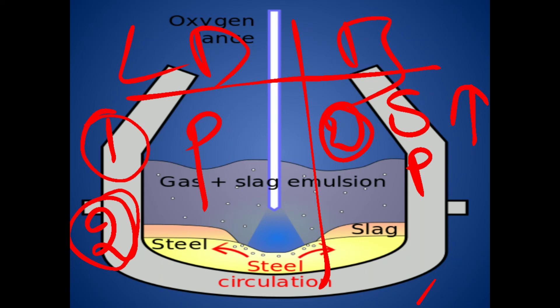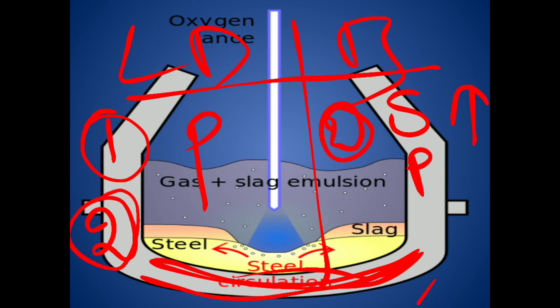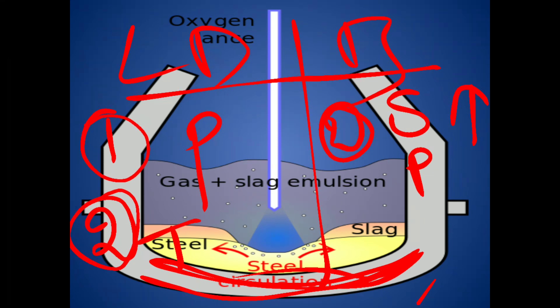Second difference: in the LD converter, the bottom is a solid bottom — there are no holes or nozzles at the bottom. Oxygen is sent from the top of the converter. In the Bessemer process, there are nozzles at the bottom through which air is blown.